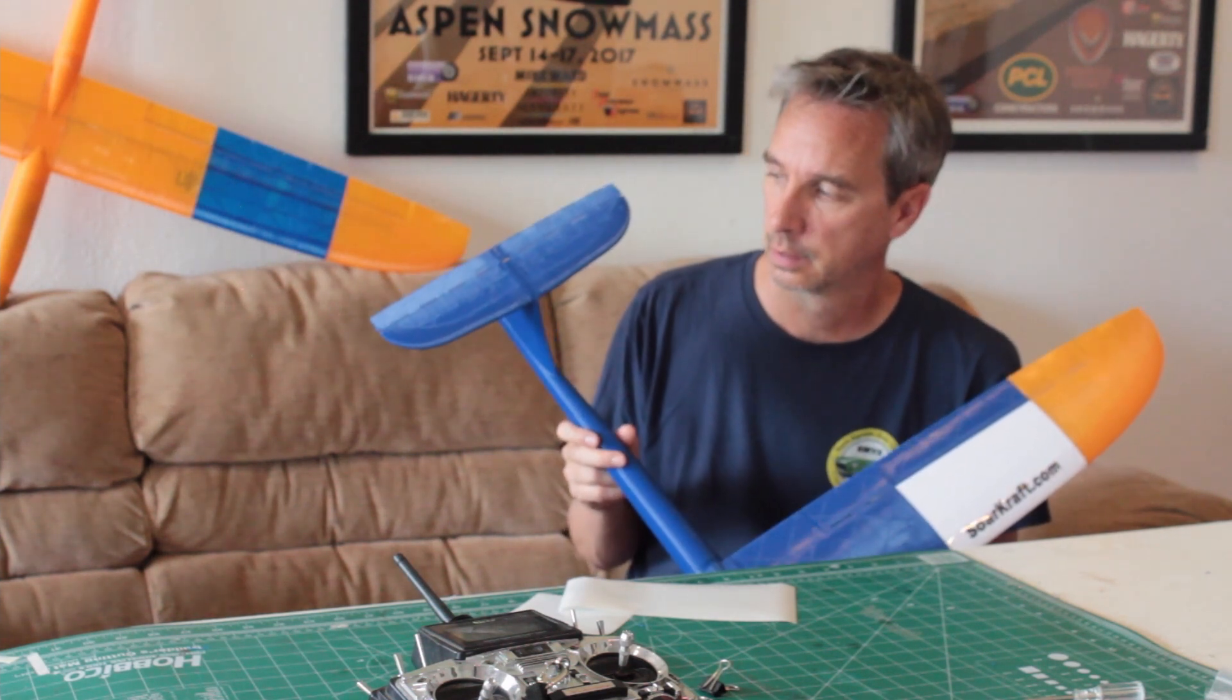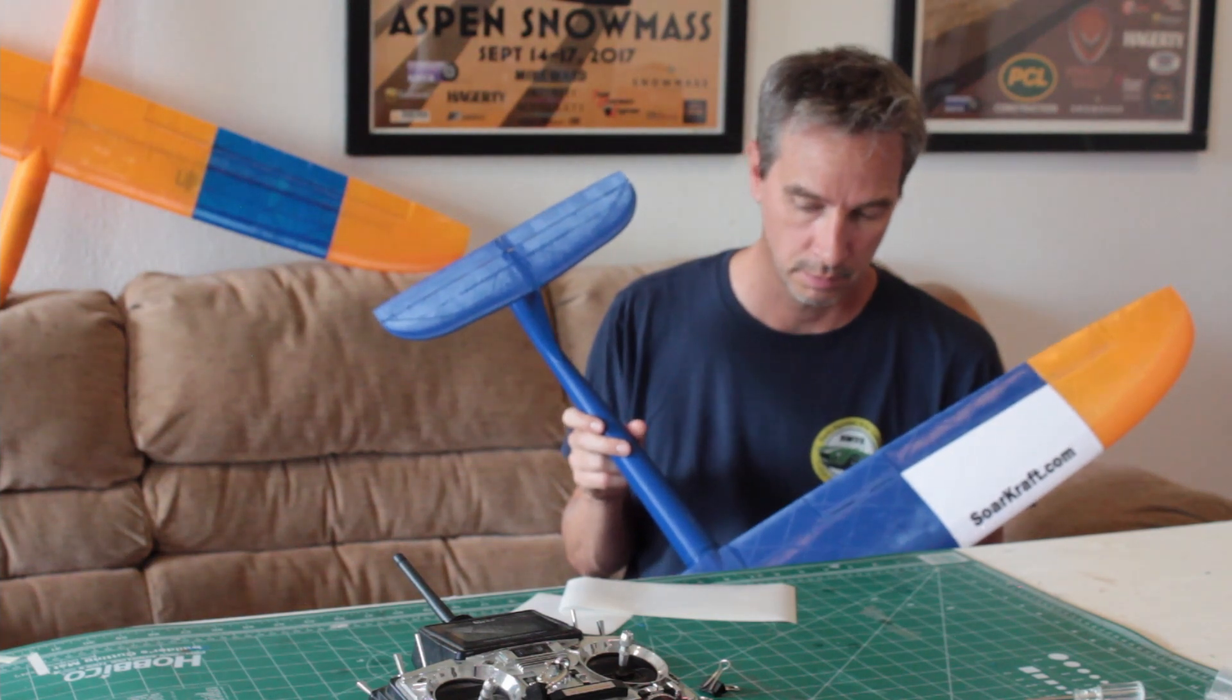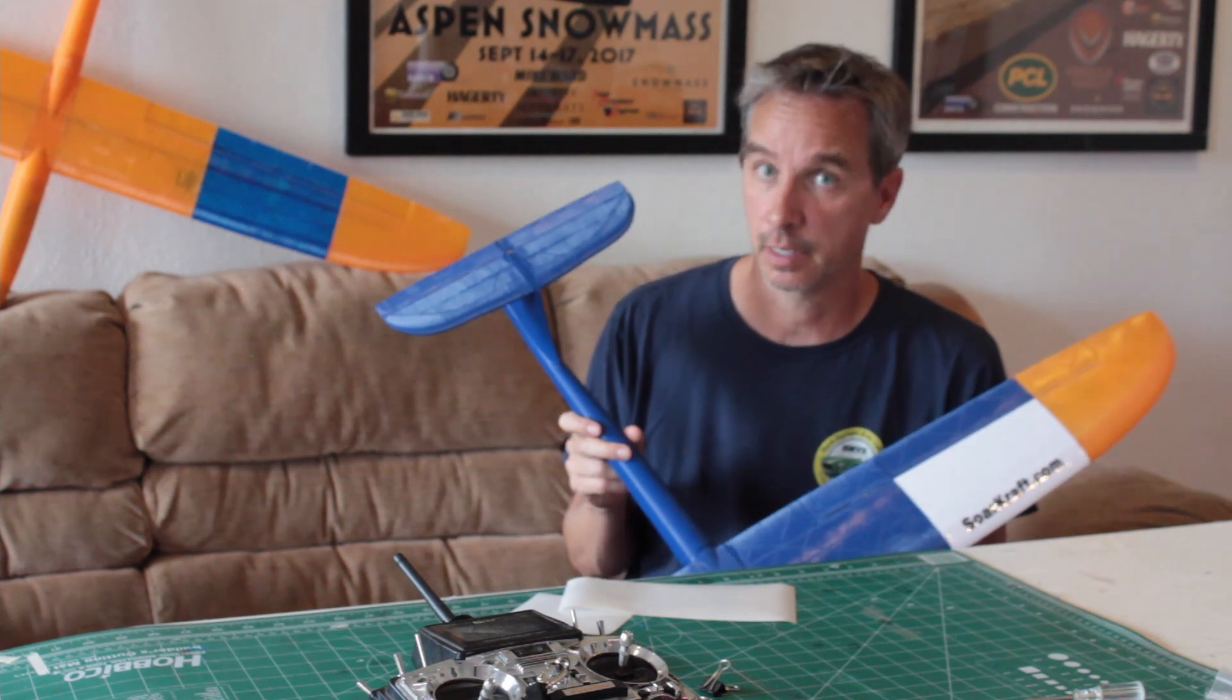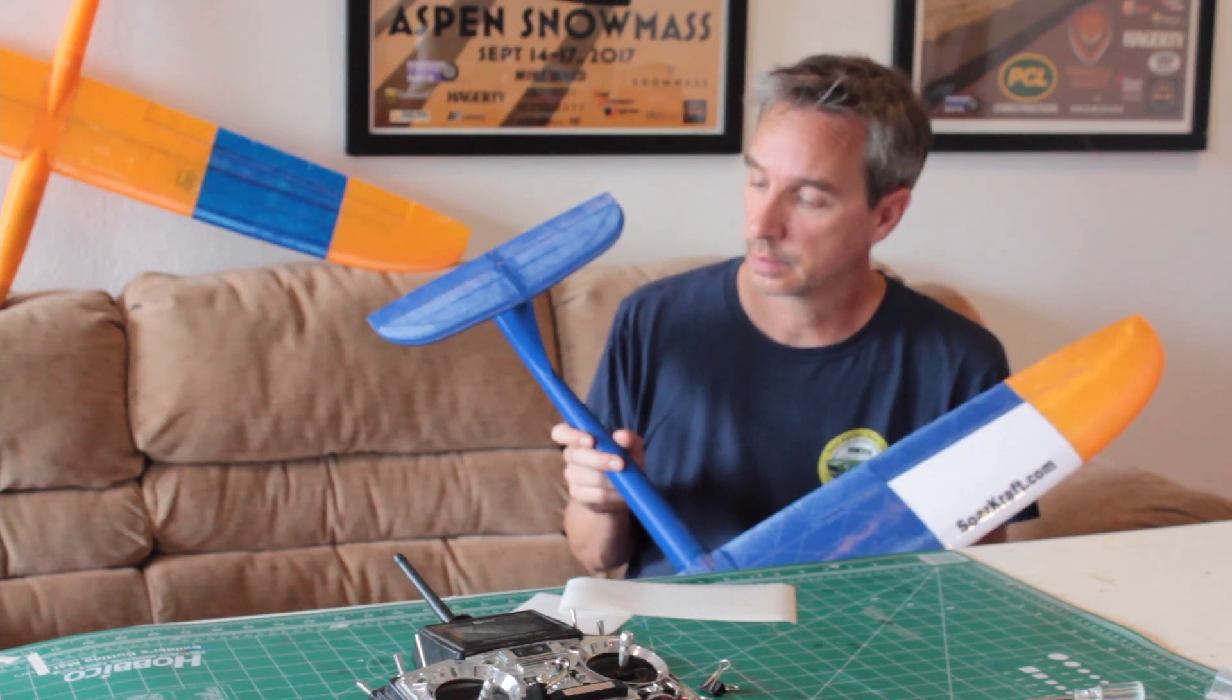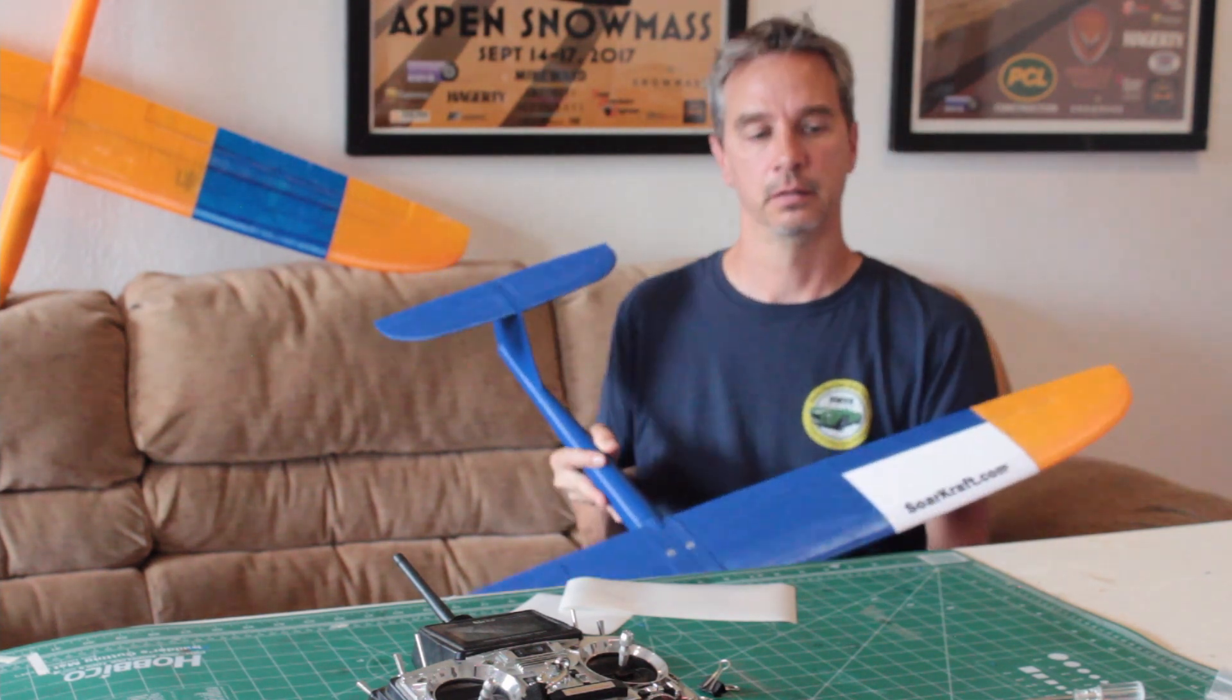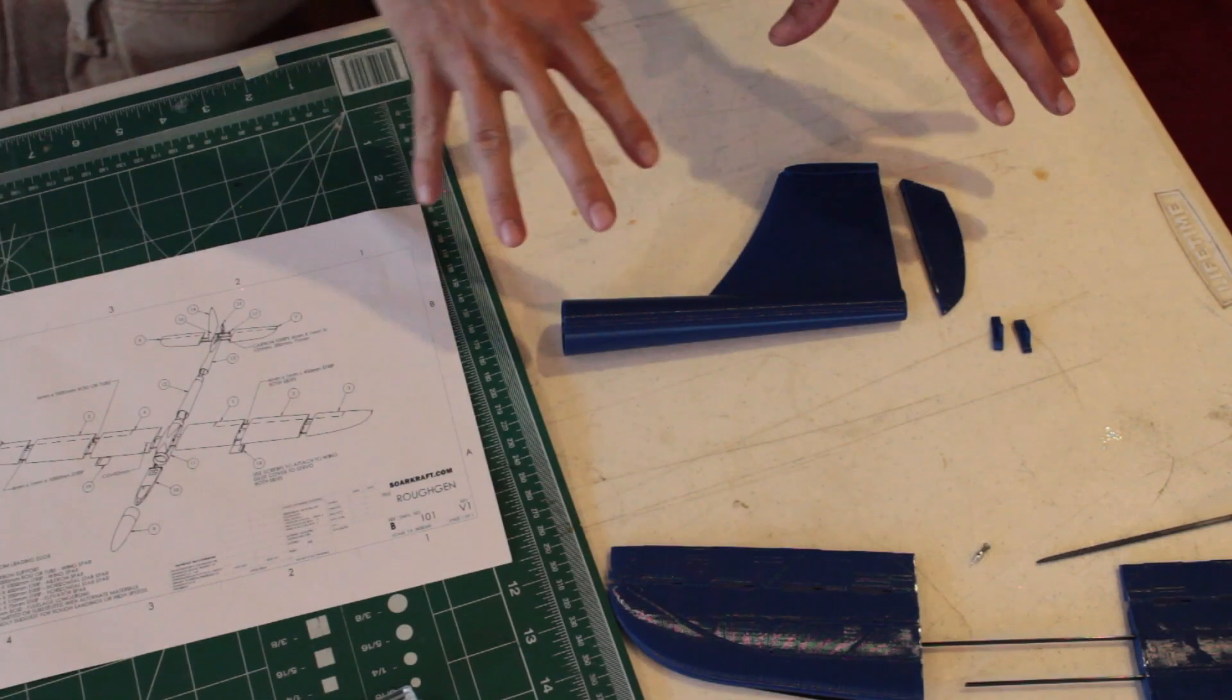To finish the whole plane airframe, you need the Rough Gen basic, which is the rest of the airframe. This video describes how to put together the detail option. All right, let's get started.